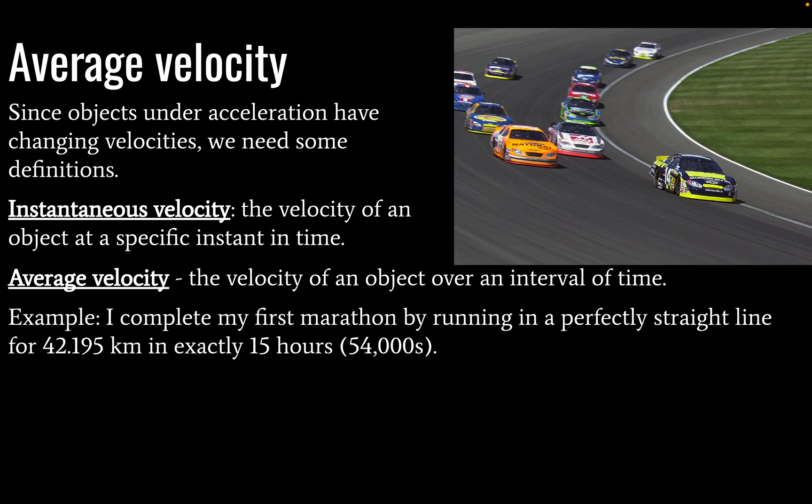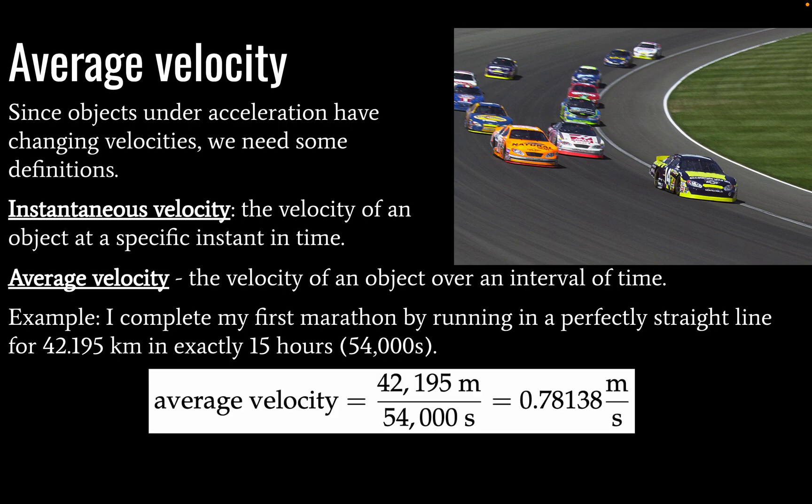Okay, here's an example. I ran my first marathon by running in a perfectly straight line for 42.195 kilometers in exactly 15 hours. Okay, so my average velocity, in this case, would then be equal to 0.78138 meters per second. And this is the correct number of significant figures, because all of these are significant.